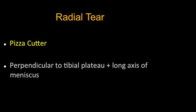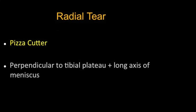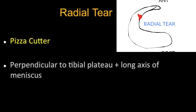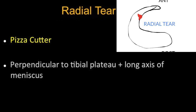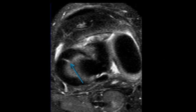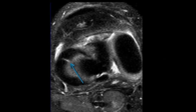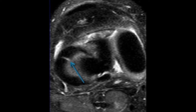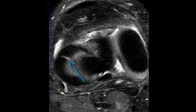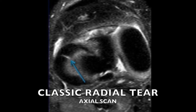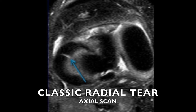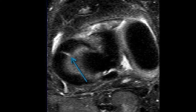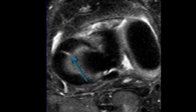Coming to radial tears — radial tears are vertical tears perpendicular to the free edge of the meniscus. Radial tears are broadly of two types: the classical radial tear and the root tear. The classical radial tear most commonly occurs at the anterior horn and body junction, next commonly in the body, and lastly at the posterior horn and body junction.